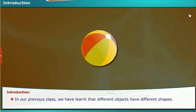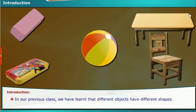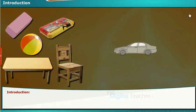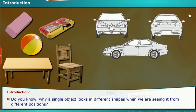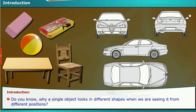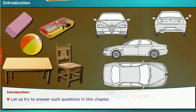Let us see the introduction of the chapter. In our previous class, we have learned that different objects have different shapes. Do you know why a single object looks in different shapes when we are seeing it from different positions? Let us try to answer such questions in this chapter.